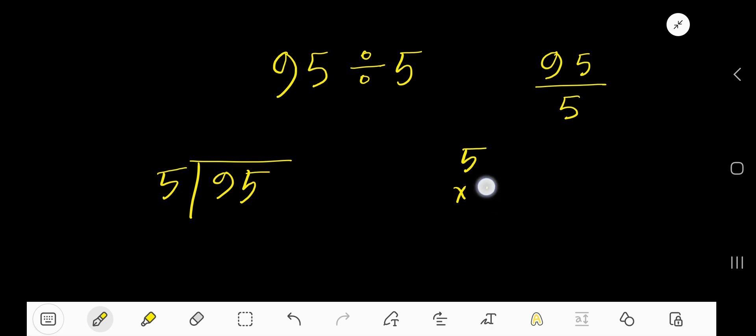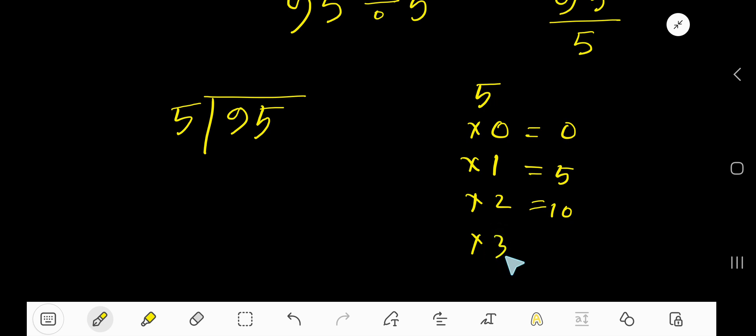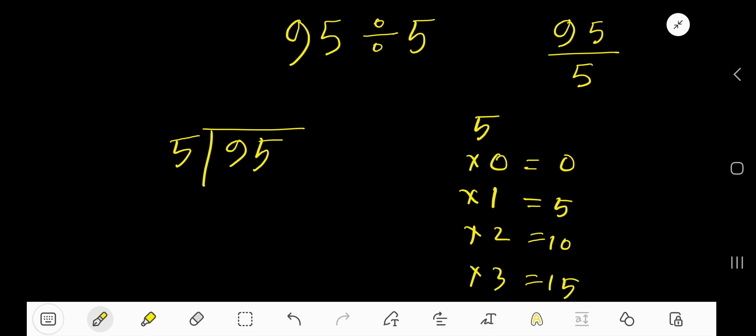5 times 0 is always 0. 5 times 1, just add 5 with the previous step, that is 5, right? And 5 times 2, just add 5 with the previous step, 10. And 5 times 3, just add 5 with the previous step, 15. You don't need to memorize the multiplication table. 5 goes into 9 how many times?